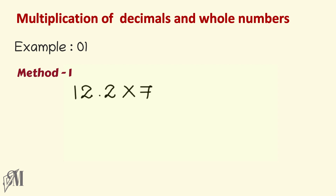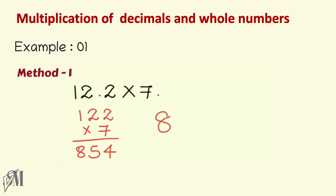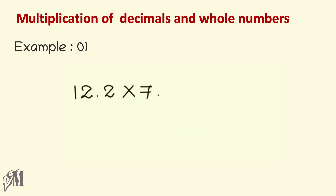The first example is 12.2 multiplied by 7. In the first method, we neglect the decimal point and write 12.2 as 122, then multiply by 7 using normal multiplication to get 854. Since there is one digit after the decimal point in the original sum, we place one digit after the decimal point in the answer, giving 85.4.